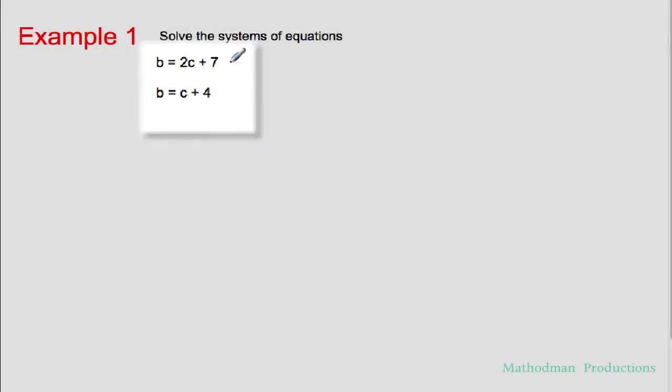The first thing you want to do is to start off with the easier equation and the question is, how do I know which one's easier out of these two? Well, in this case, both of them are actually easy because one variable is solved for already, b equals 2c plus 7.